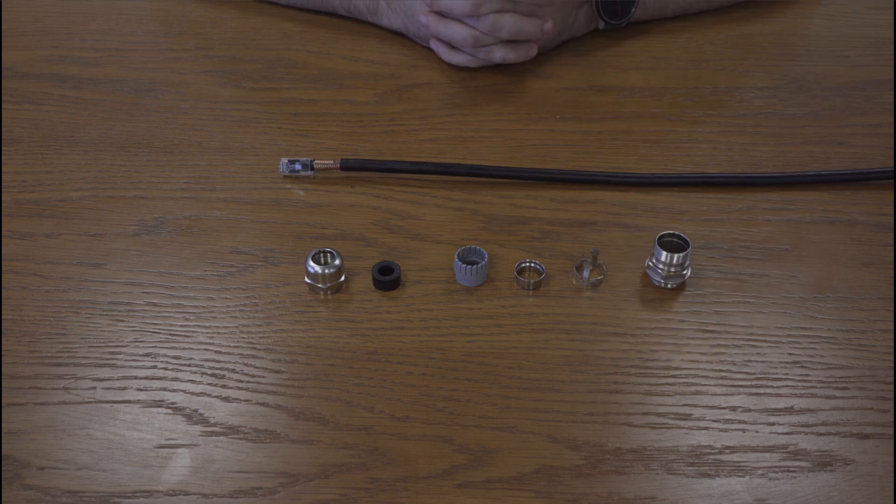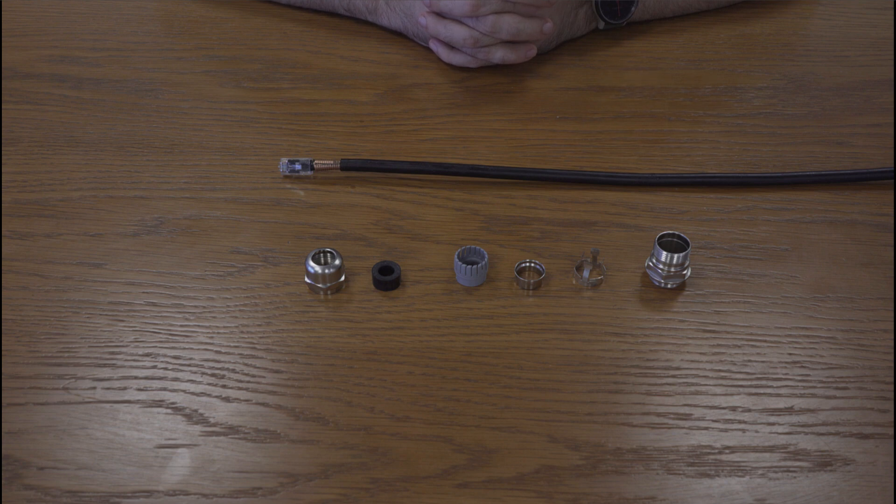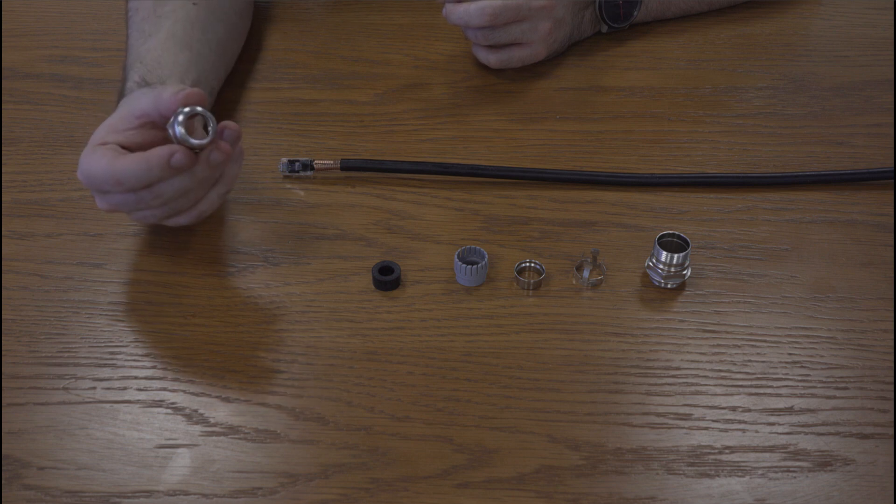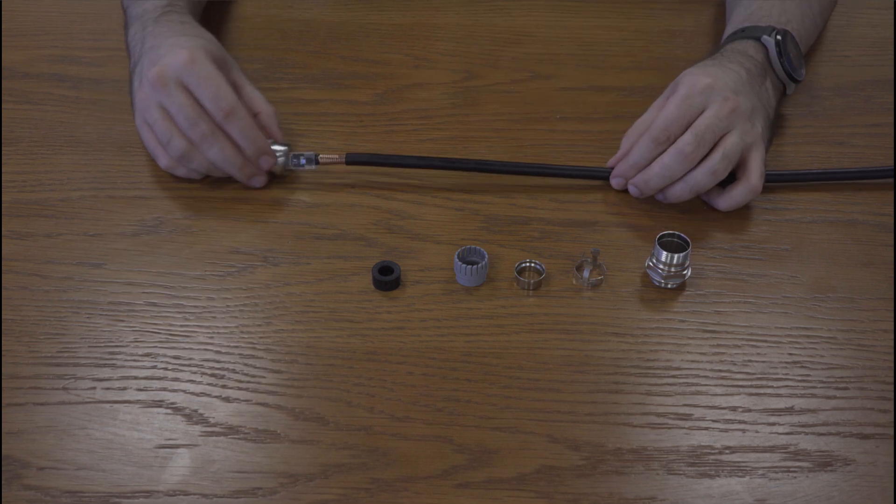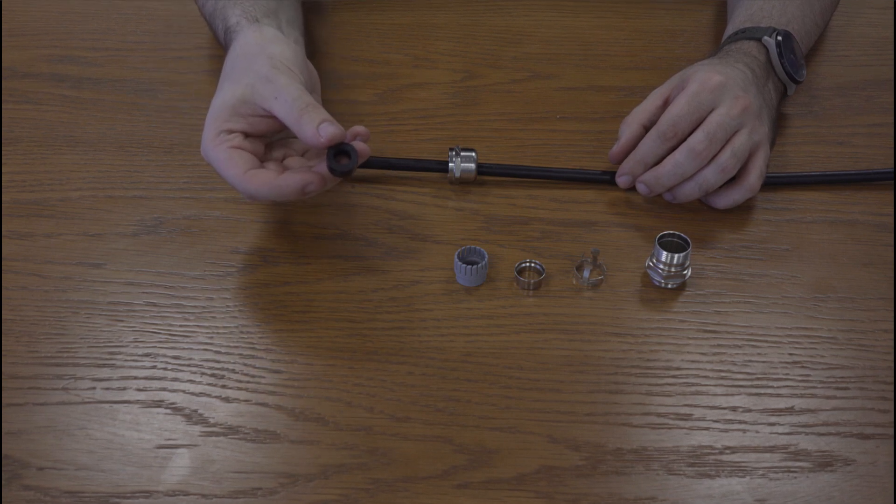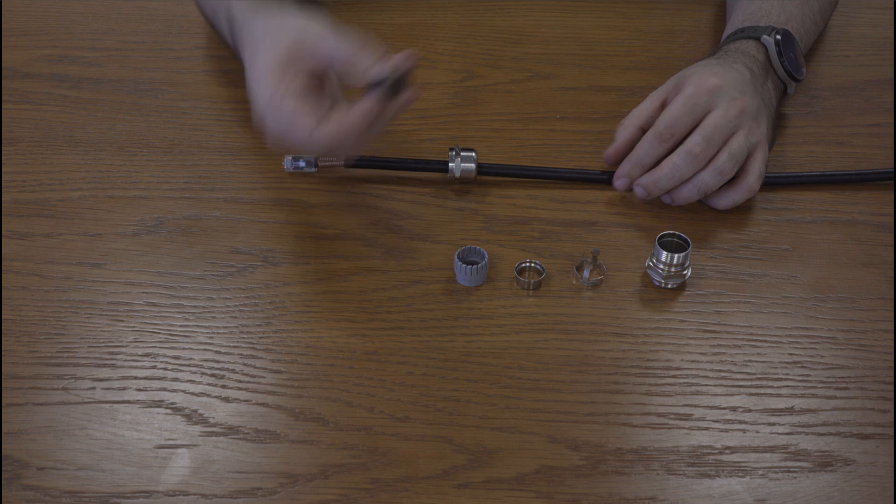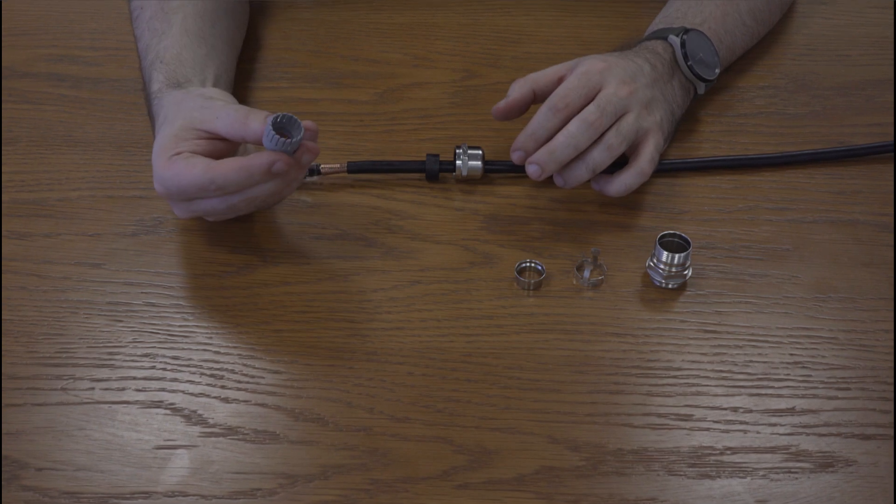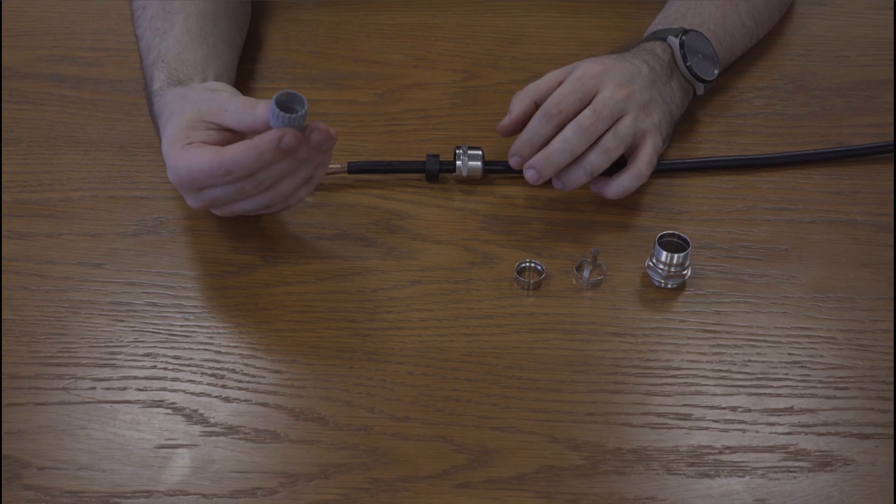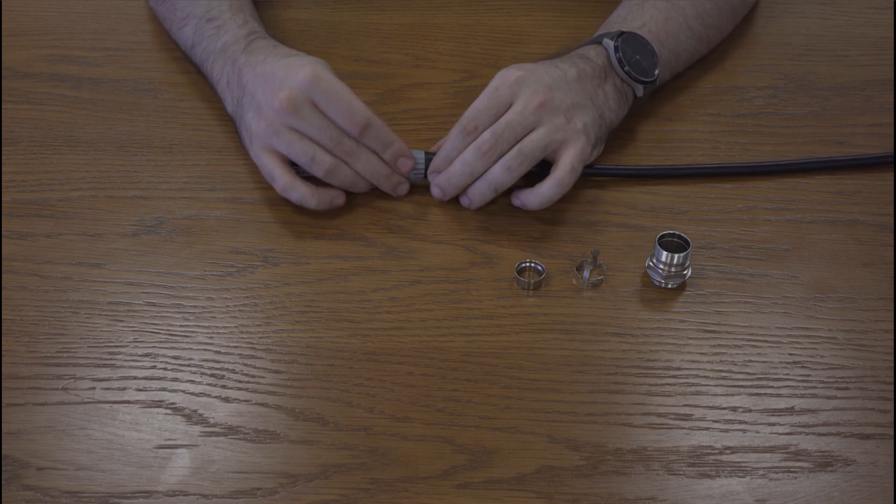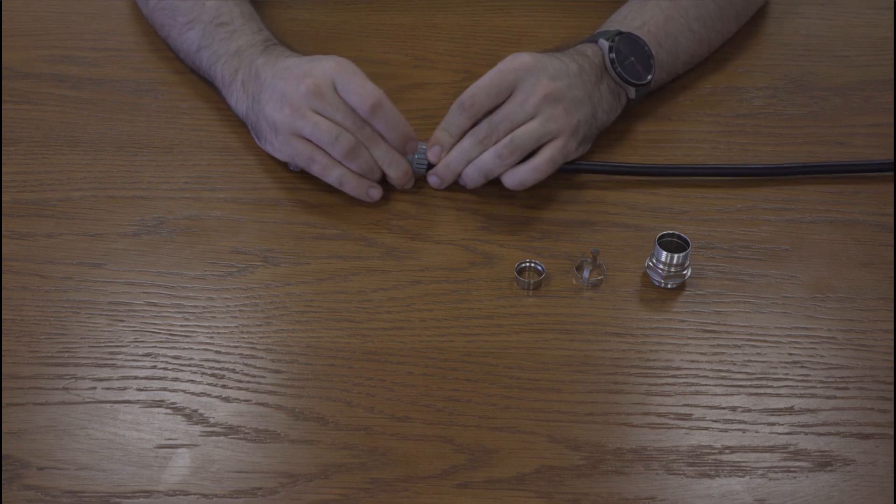Then to attach the EMC gland to the drop cable, you first put the cap on, narrow end first. You then clip the rubber insert around the cable because it already has a split in it like this. Then slide the plastic collar down, fingers first, and insert the rubber insert into the plastic collar.